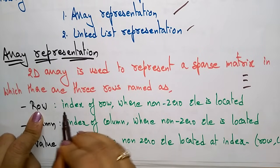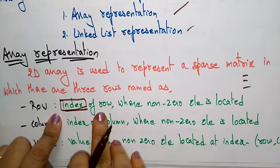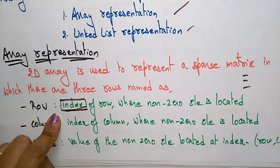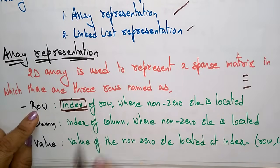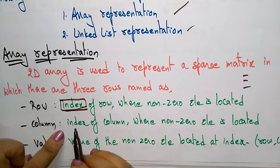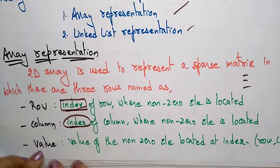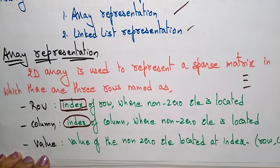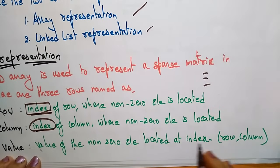Row indicates the index of the row where the non-zero element is located. You have to concentrate only on the non-zero element, not the zero elements — find out where the non-zero element is present in the matrix. Column indicates the index of the column where the non-zero element is located. Value is the particular non-zero element present at that row and column index.